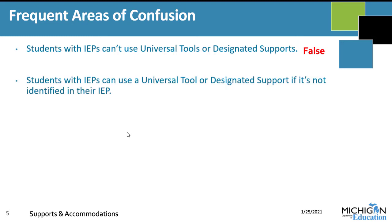Here's another one: students with IEPs can use a universal tool or designated support if it's not identified in their IEP. This is also a false statement. Students with IEPs should have everything they need identified in their IEP or 504, even if that's something listed as a designated support.